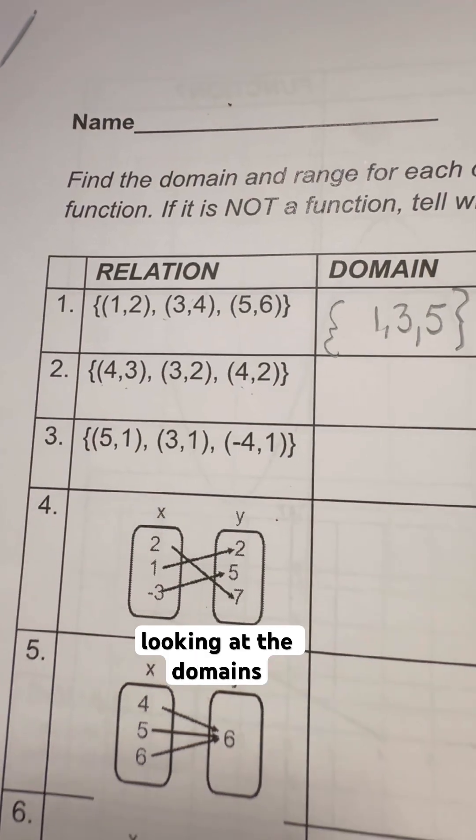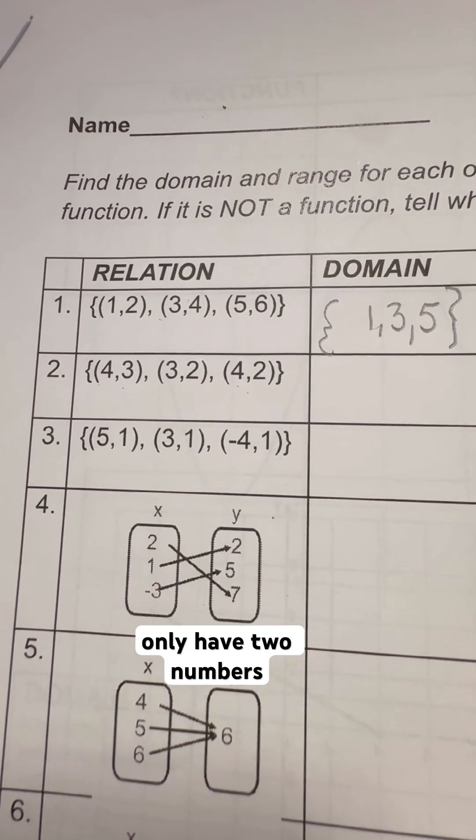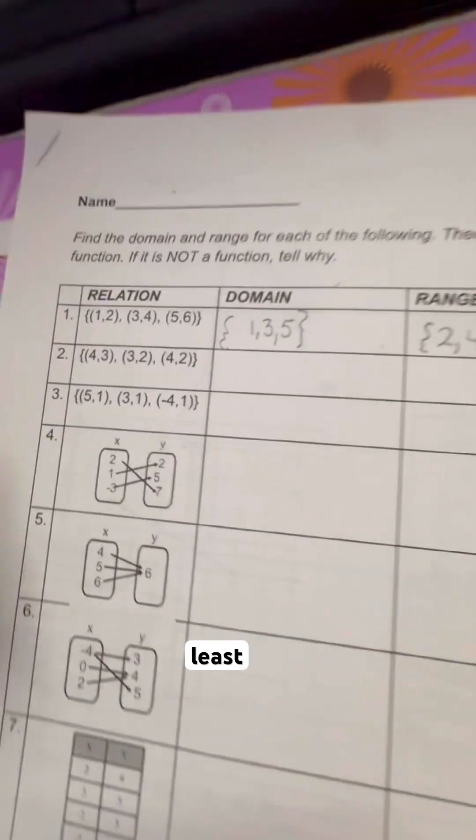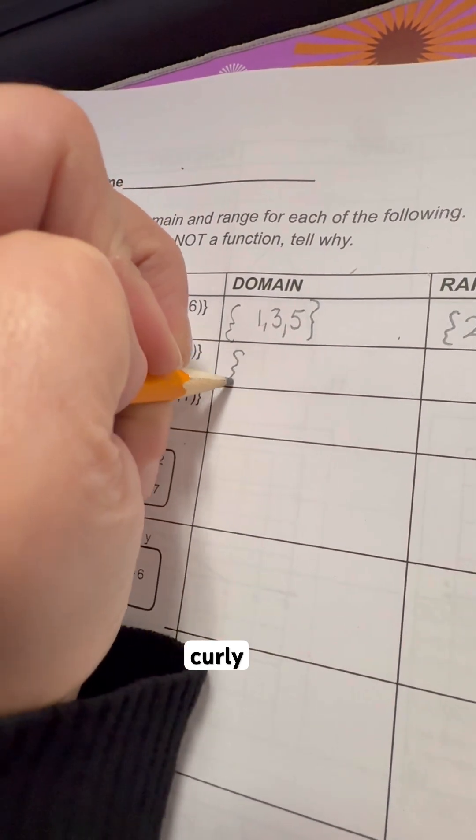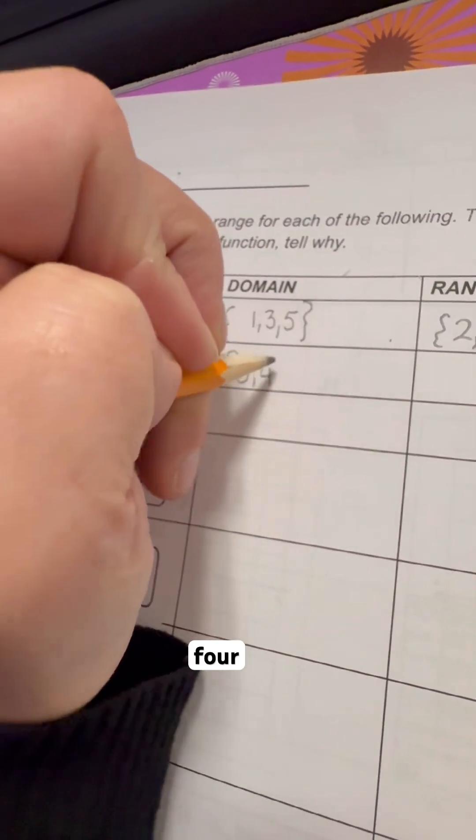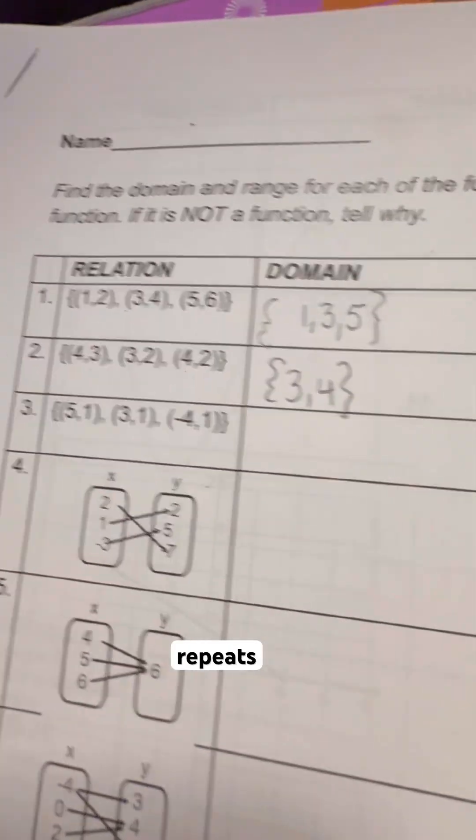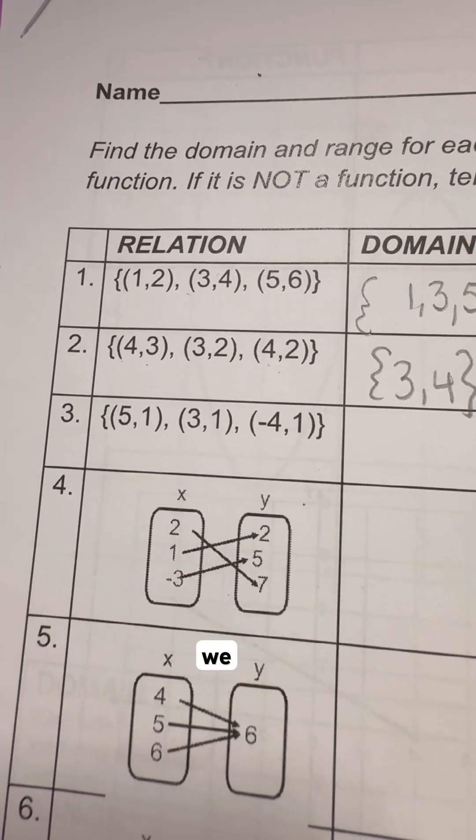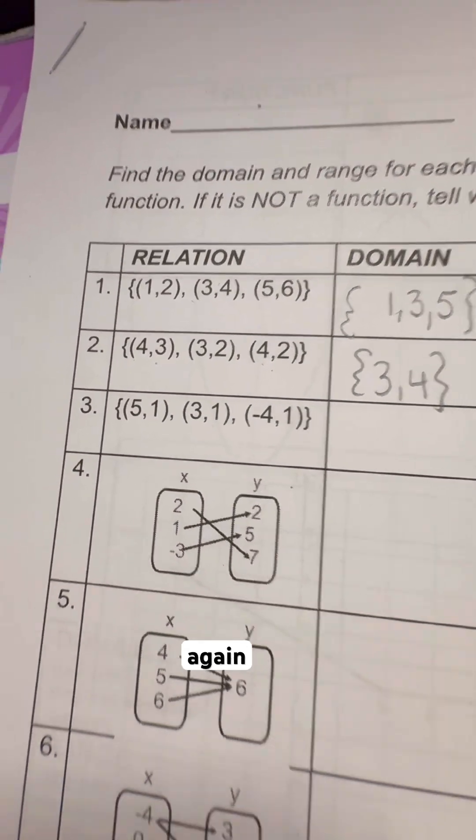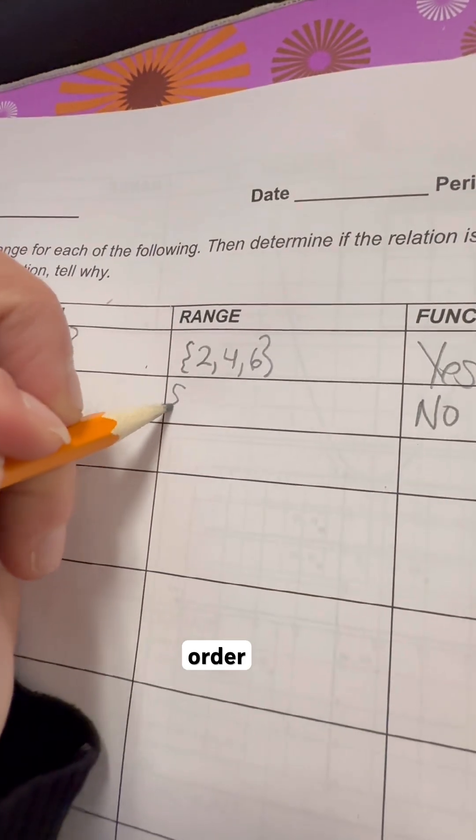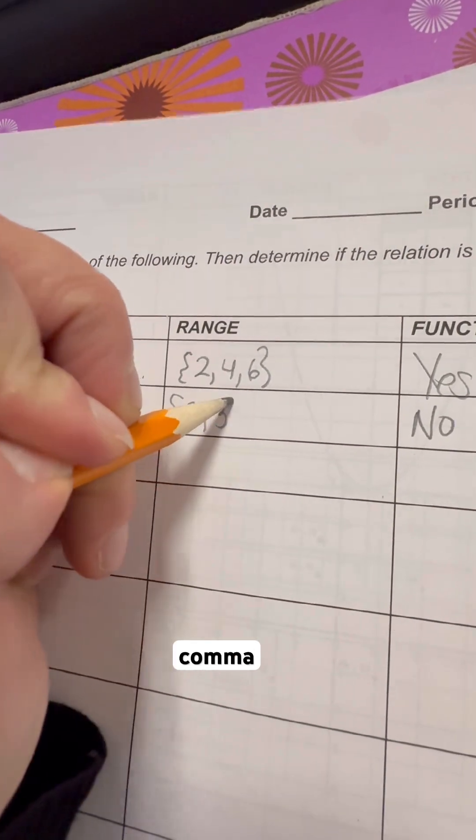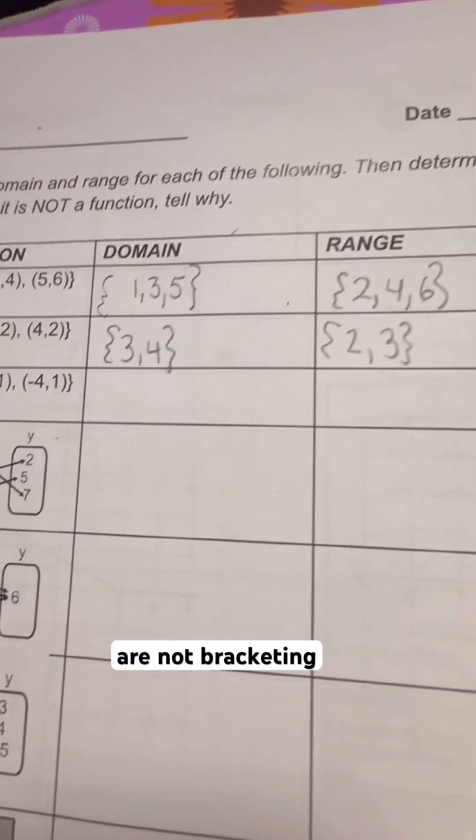So when we're looking at the domains, we only have two numbers, a 3 and a 4, least to greatest order. So curly brackets, 3 and 4. We don't need to rewrite repeats. And then we're going to go ahead and look at those y values. We only have a 2 and a 3. Again, least to greatest order. And so 2, 3.